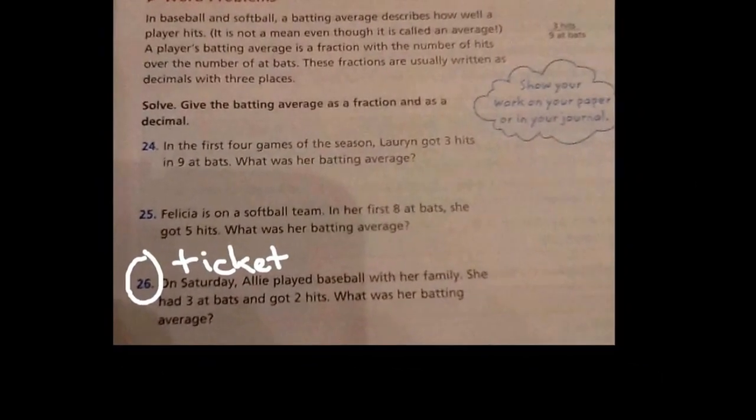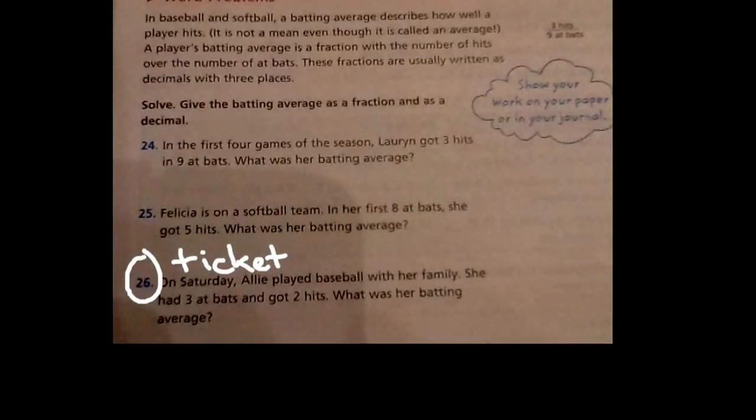Okay, baseball fans, we've got some baseball trivia here for you. It says, in baseball and softball, batting average describes how well a player hits. It's not the mean, even though it is called the average. Remember, the mean is when we add up all the several games and then divide by how many. So, batting average is not the same as the average we find in mean, median, mode, and range. Okay, so it's a fraction of the average. The batting average is a fraction with a number of hits over a number of at-bats. These fractions are usually written as decimals with three places. So, I'm going to show you how to do that. Those of you who are baseball fans probably already know how. And the first problem, number 24, it says, Lauren got three hits out of nine at-bats.